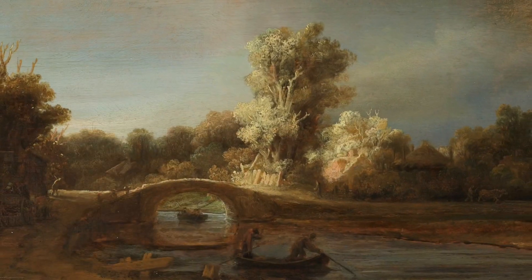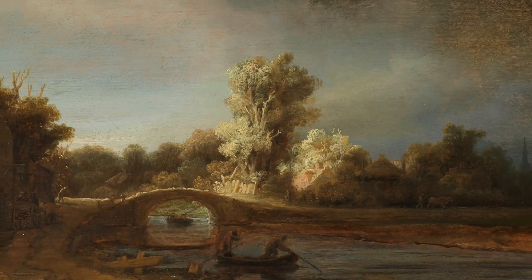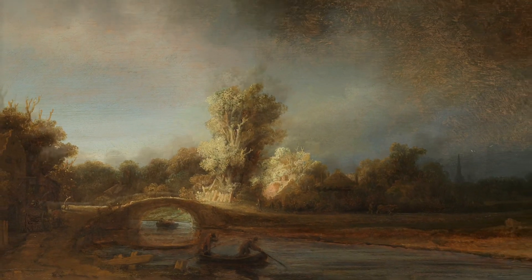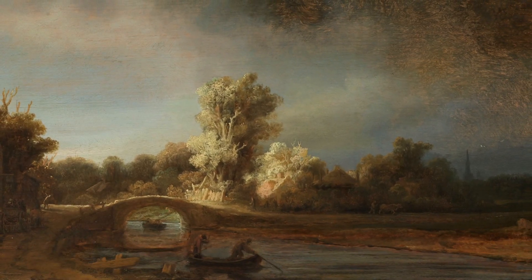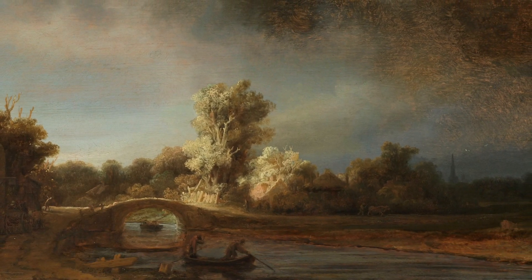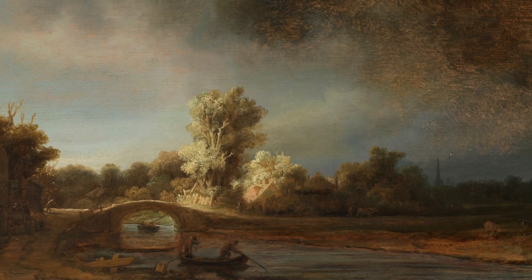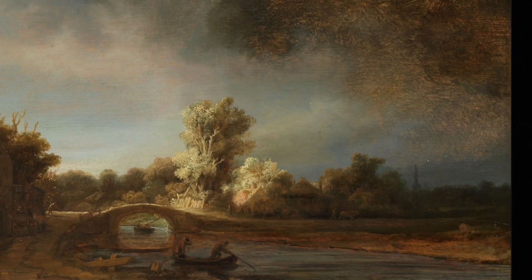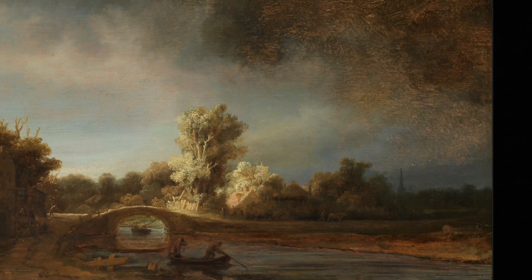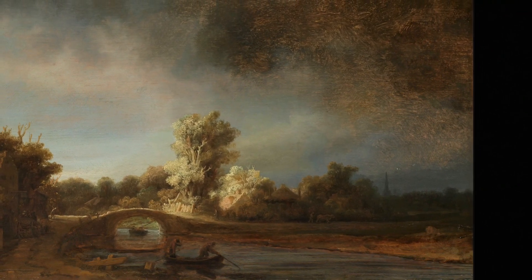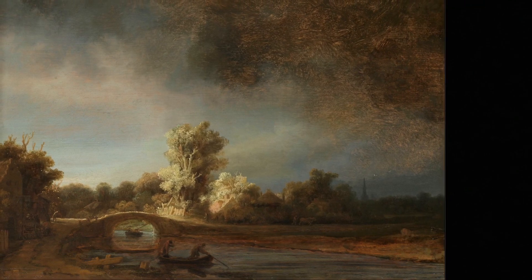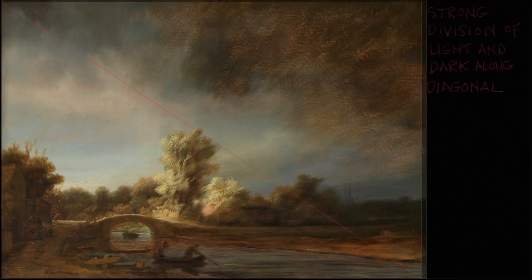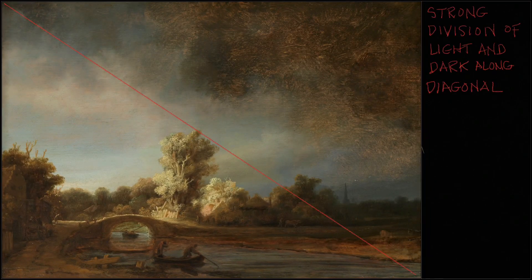Rembrandt was really a master of all aspects of painting. Here's a closer look at this painting, and as we pan back I want to look at the whole thing and talk about how it's put together and composed. A lot of Dutch 17th century painters like this strong diagonal division of light and dark — if we make a diagonal corner to corner, you see most of the darks are on the top right and most of the lights are on the bottom left.